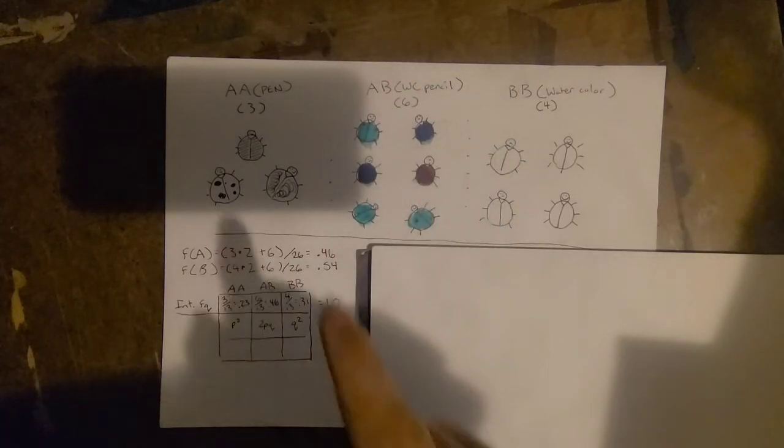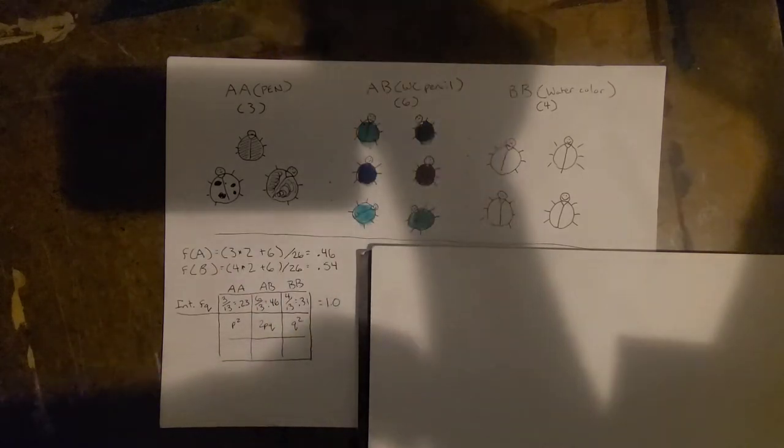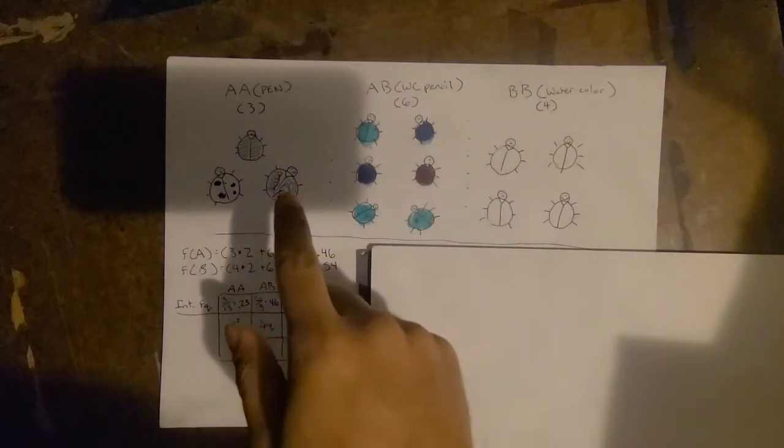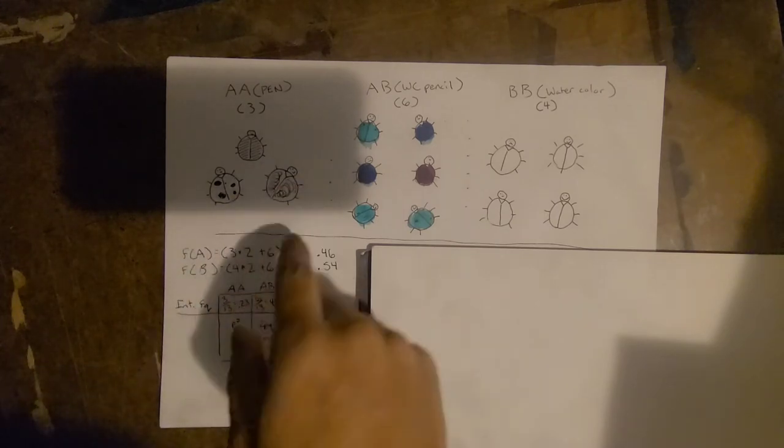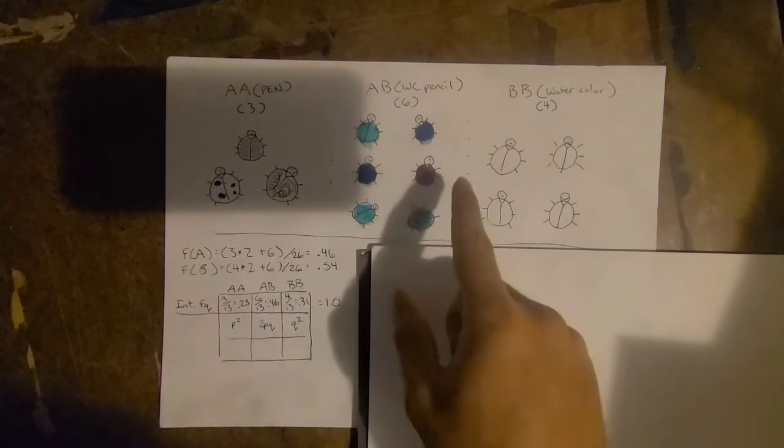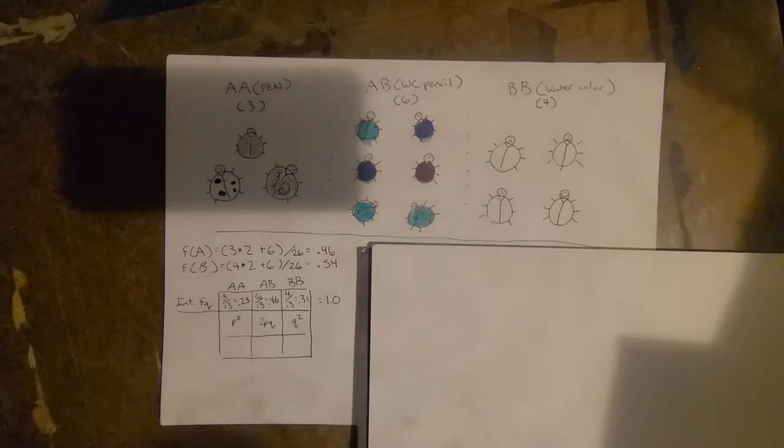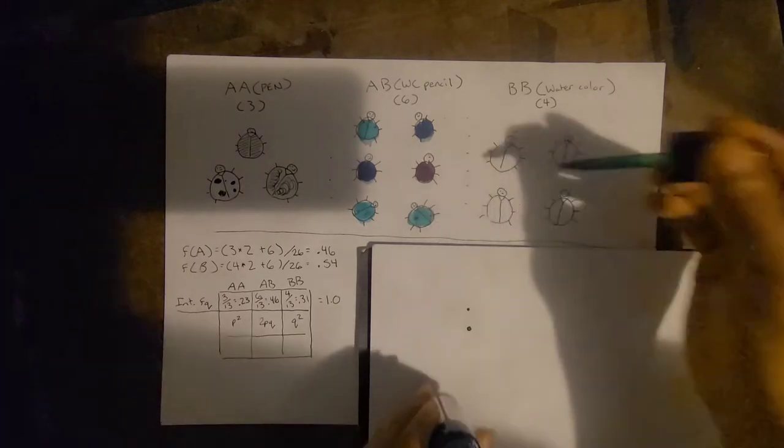So what we have here are a population of diploid organisms that reproduce through mating: the AA group which is made up in purple pen, the AB group which is watercolor pencil partially dried, and the BB group which is concentrated watercolor.